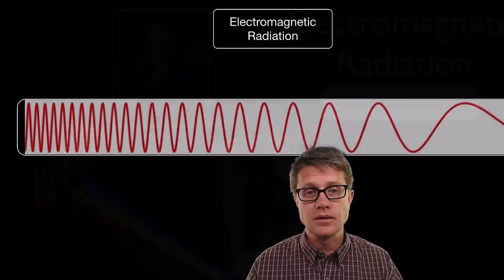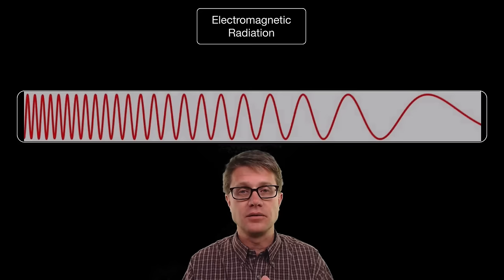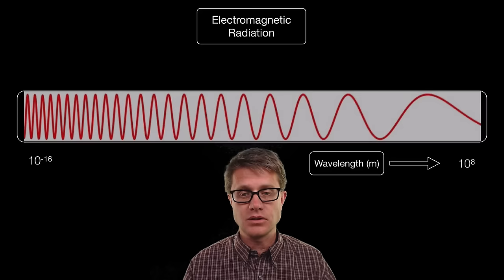Electromagnetic radiation—we only see a small sliver of that called visible light. But there is a whole bunch of other electromagnetic radiation out there in the universe.